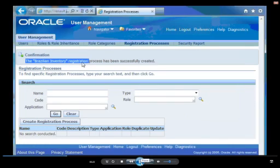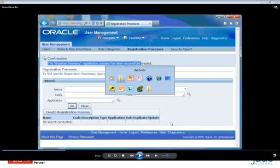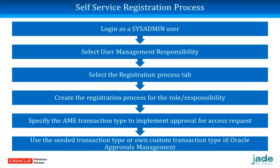A confirmation message is shown: the Brazilian Inventory registration process has been successfully created. To recap the steps: we logged in as sysadmin, selected the User Management responsibility, went to the Registration Process tab, created the registration process for the inventory responsibility, and specified the custom AME transaction type. In response to an audience question — yes, these setups are predefined. For this demo, I created a custom transaction type, set up the approval hierarchy in advance.